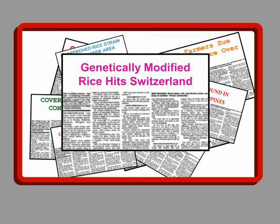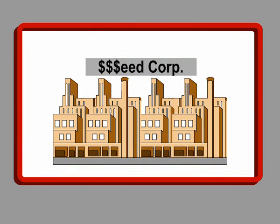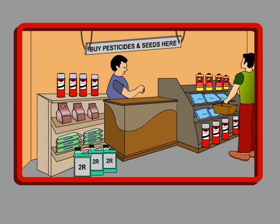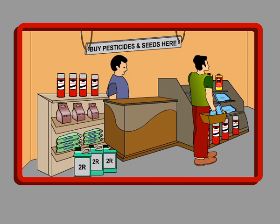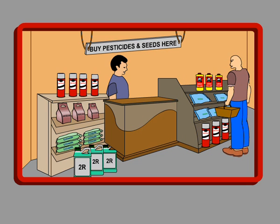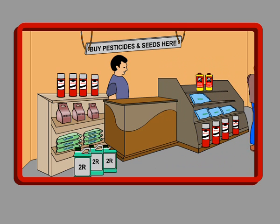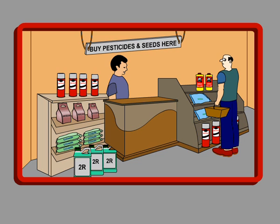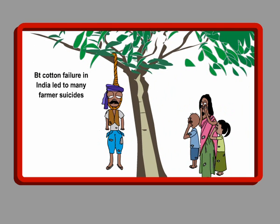Not many people realise that GE rice is created and patented by huge agrochemical companies solely for profit. Patenting means that farmers cannot save and use seeds like they have done for generations — instead, they will have to buy new GE seeds from the companies every cropping season. If Asian farmers were forced to buy GE rice seeds every planting season, it would amount to millions of US dollars every year, making poor farmers even poorer and robbing them of their inherent right to save and grow their own seeds. Hundreds of farmers in India killed themselves when their GE cotton crop failed to produce the yield they were promised. They lost everything, and their families are still suffering today.